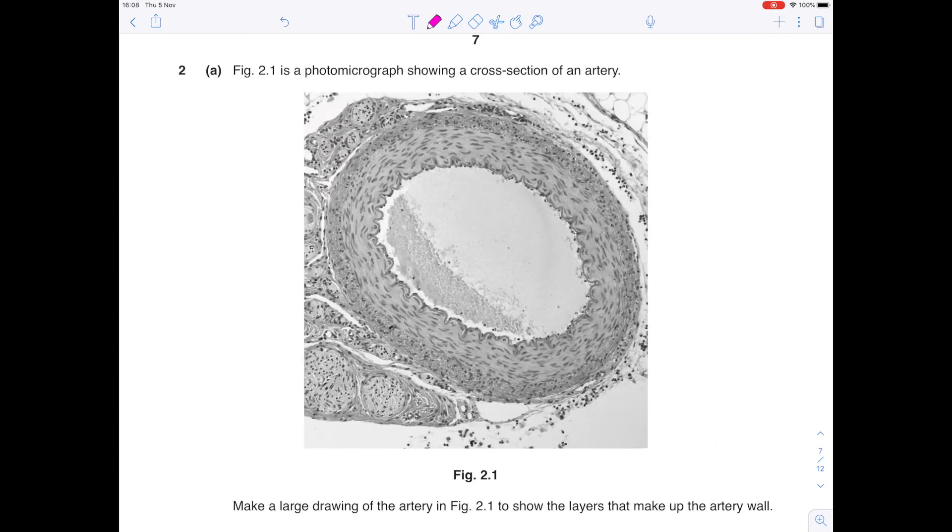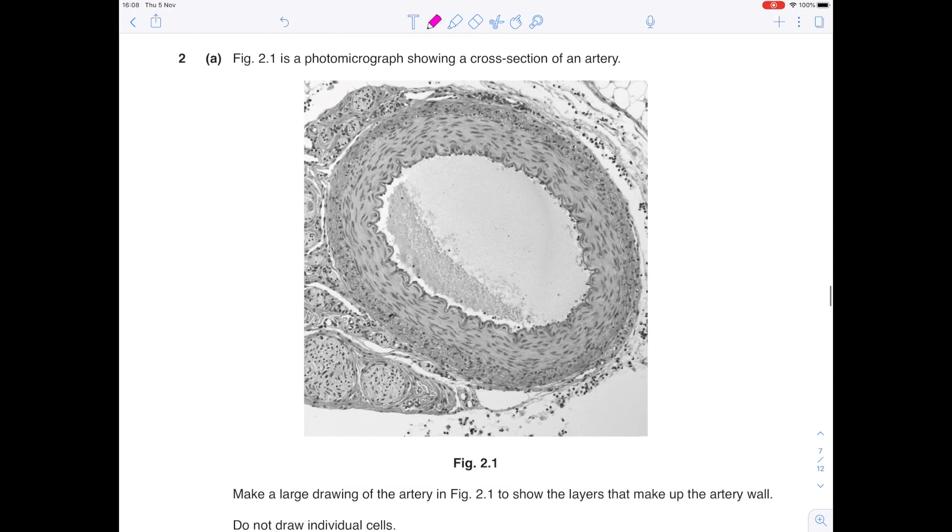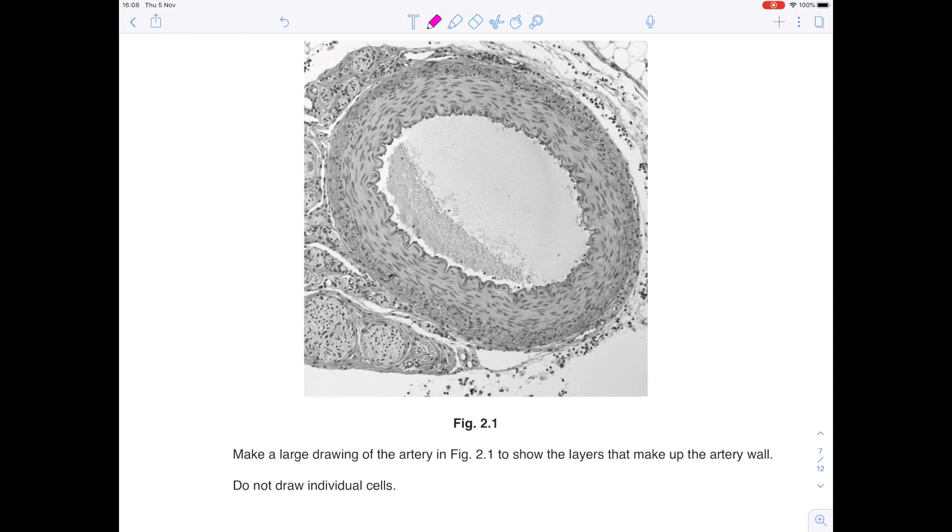Figure 2.1 is a photomicrograph showing a cross-section of an artery. Make a large drawing of the artery in Figure 2.1 to show the layers that make up the artery wall. Do not draw individual cells.